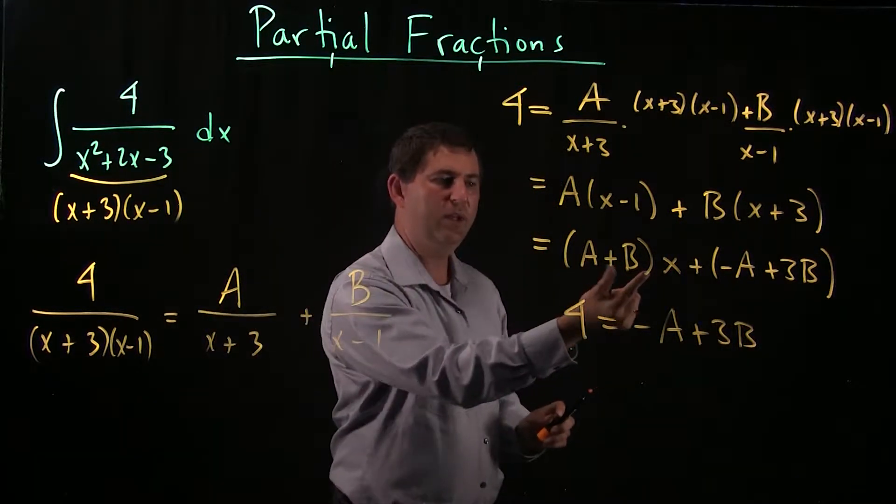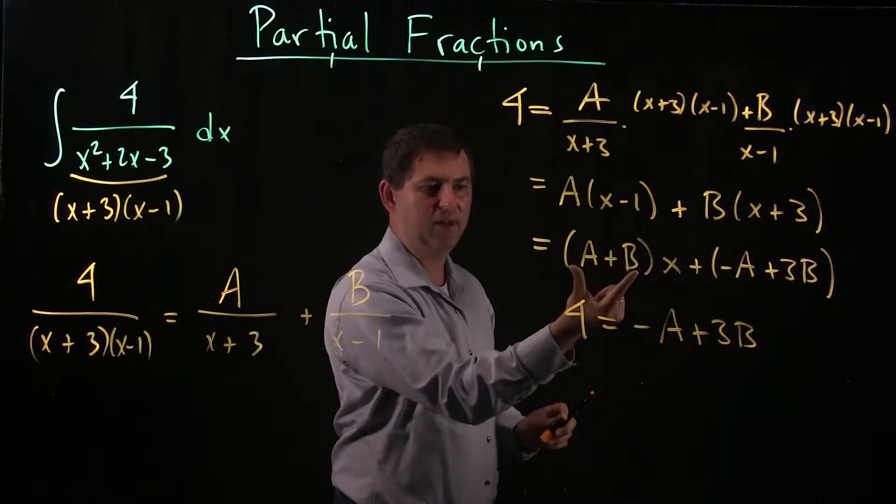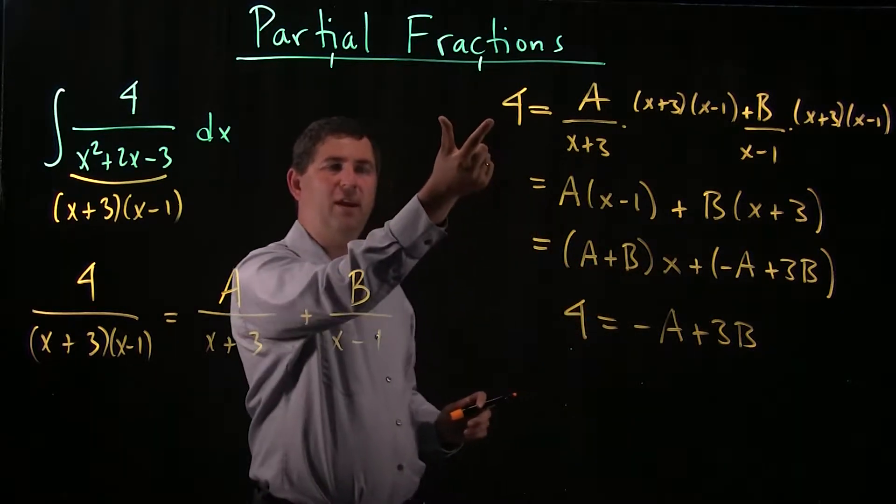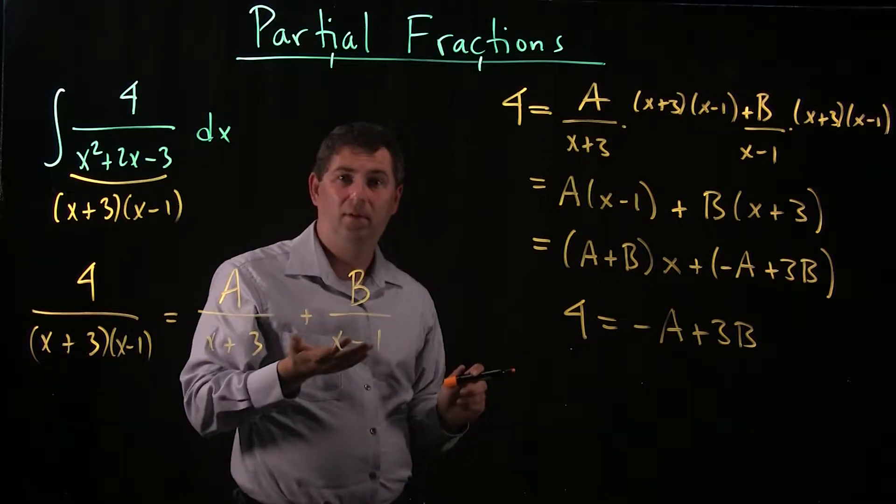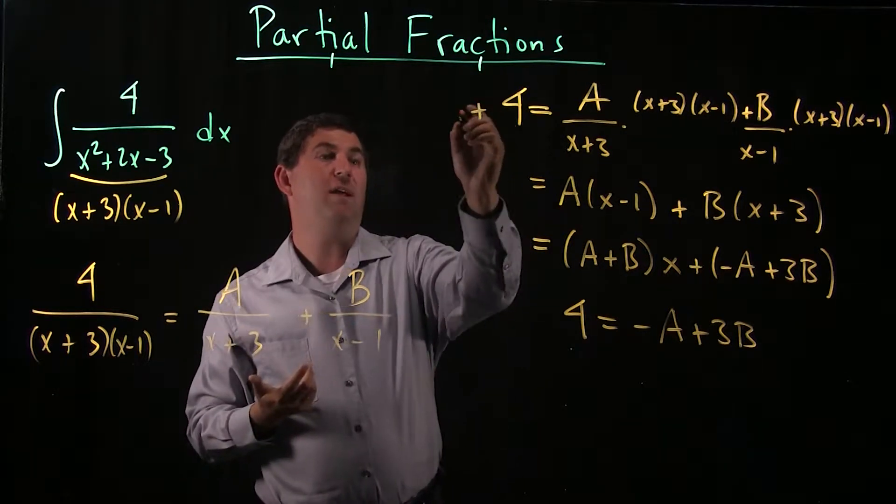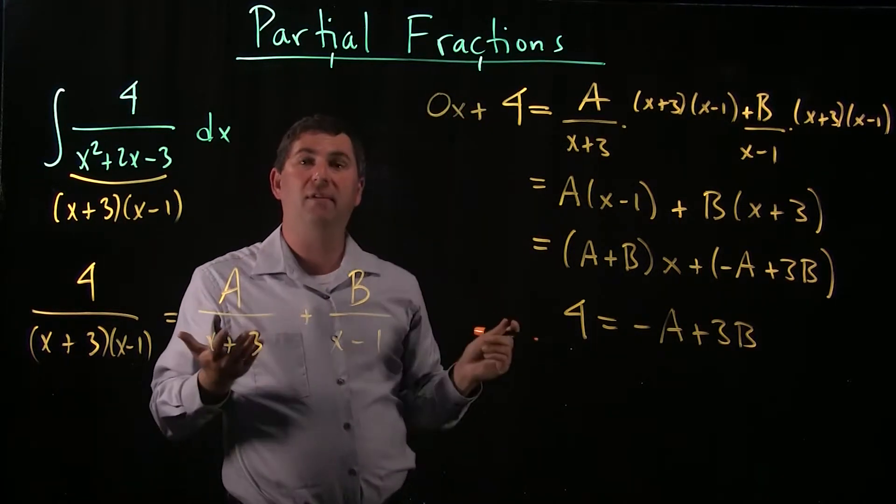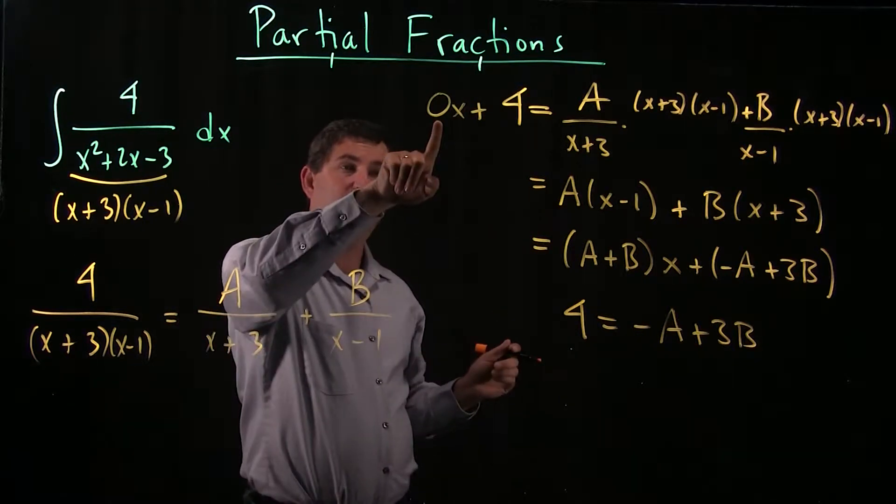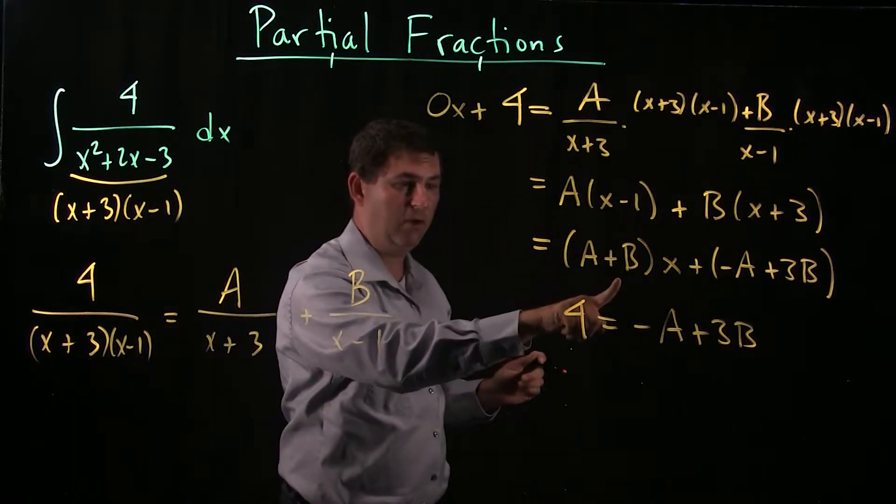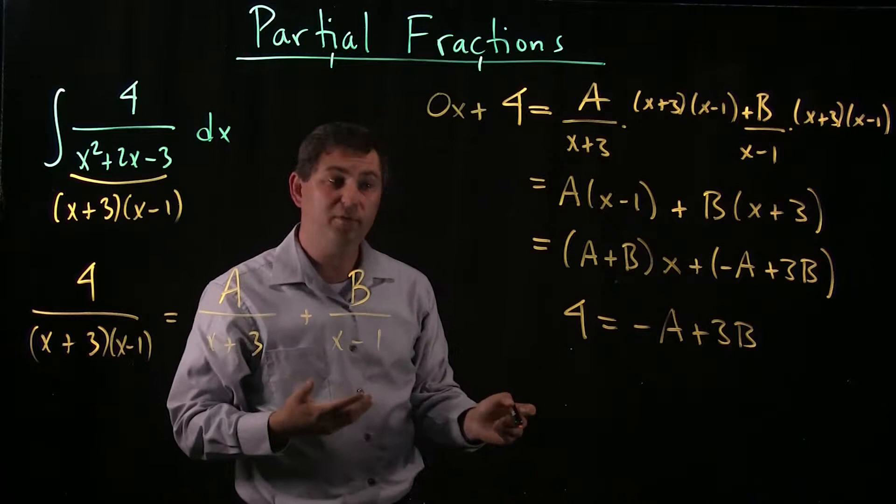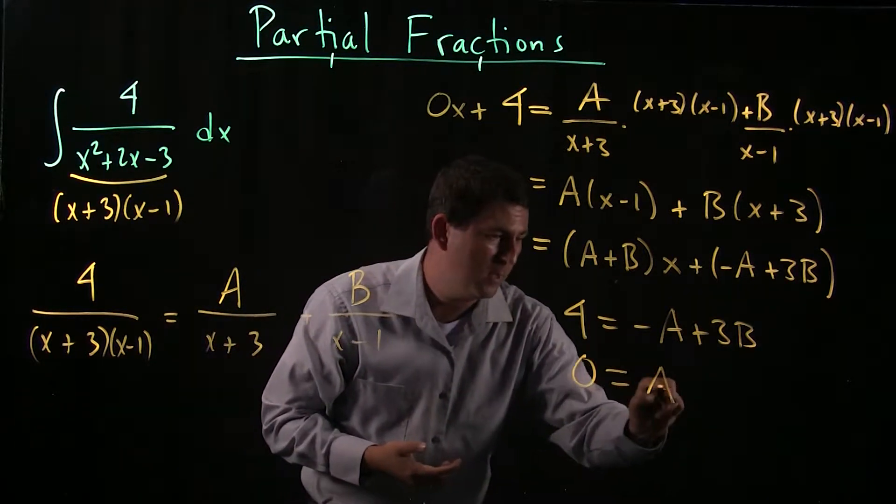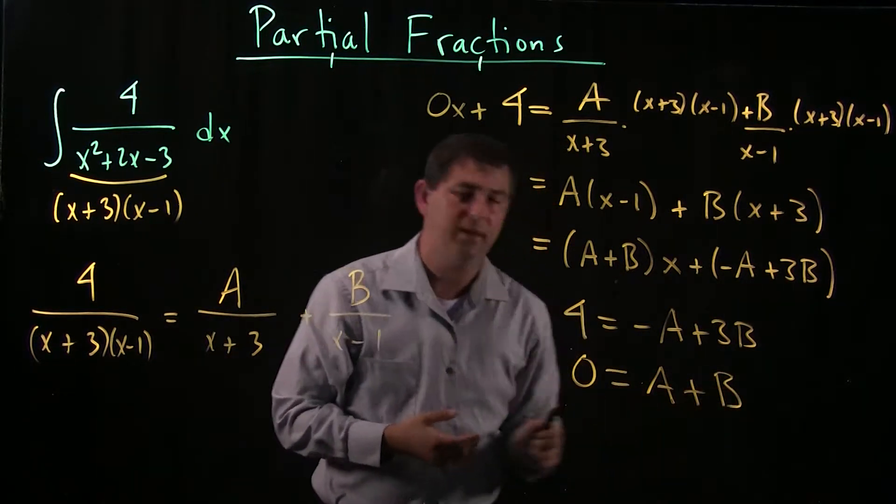And what's the coefficient of x? Here it's a plus b. And over here, well, there is no x. What do I do? Well, I could write this as 0x's. So the coefficient of x is 0. The coefficient here of x is a plus b. So those must equal each other. So 0 equals a plus b.